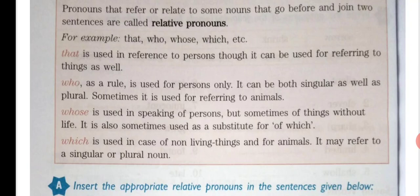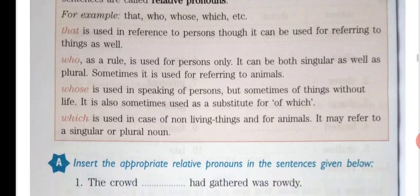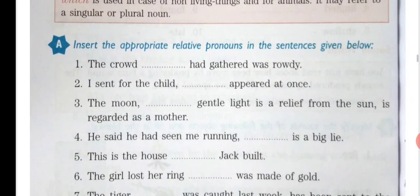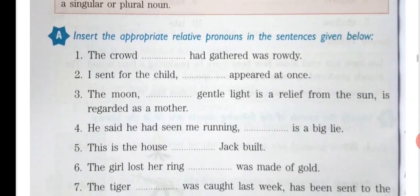'Which' is used in case of non-living things and for animals. It may refer to singular or plural nouns. You will understand it more clearly when we do part A of Grammar Glee.